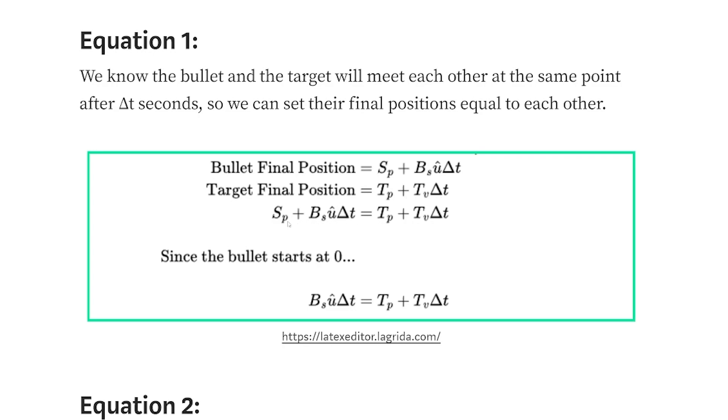So of course, if we intuit that they meet at their final position, you can set these two equations equal to each other. And since the bullet starts at the shooter's position of zero, since we're doing this all relative from the shooter, you can just cancel out the shooter's position.